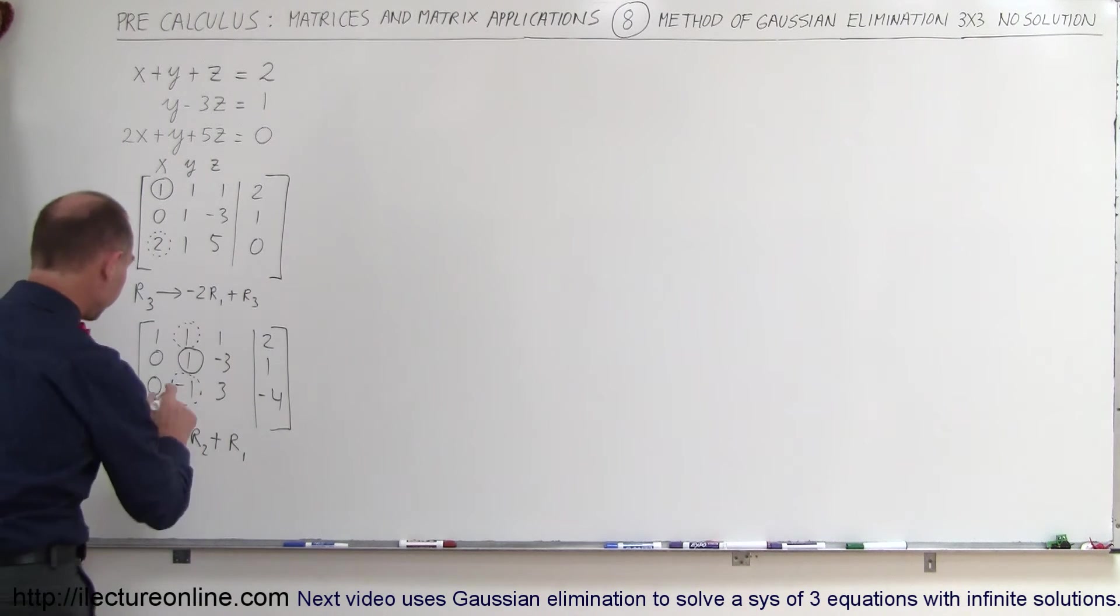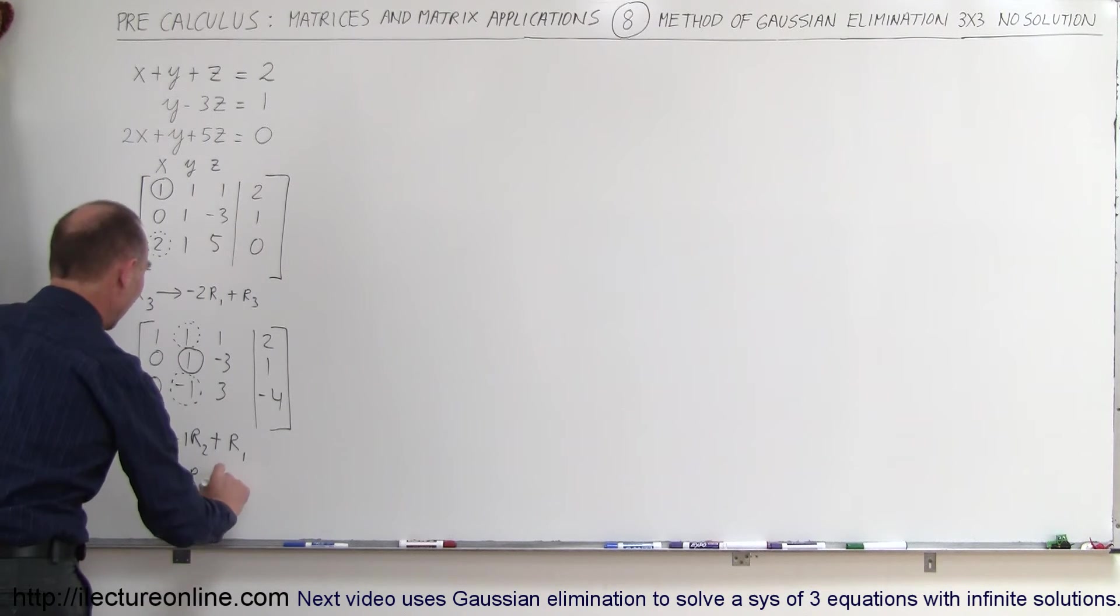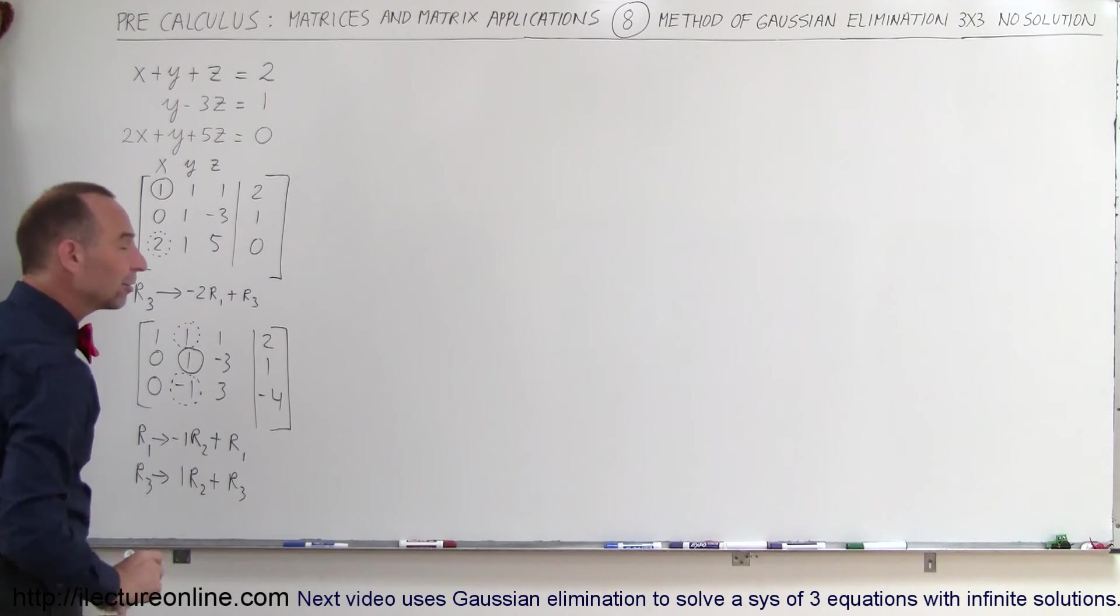In the third row, the third row will now become the negative of that number, which is a positive 1, times the row with 1 in it, which is R2, and adding it to R3, and that will cause this to turn into 0, and that to turn into 0.